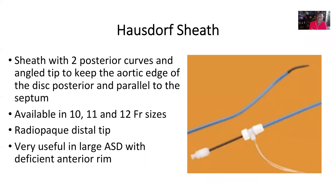The Hustoff sheath is a commonly used sheath — I like this sheath very much. It has two posterior curves and an angled tip to keep the aortic edge of the disc posterior and parallel to the septum. It comes in 10, 11, or 12 French sizes, allowing us to use bigger devices. It has a radiopaque distal tip so you know exactly where the tip of the sheath is. It's very useful in large ASDs with a deficient anterior rim. One has to be careful to avoid air entrapment when using this sheath. If you don't have a Hustoff sheath, you can also shape your sheath with a similar curvature to get the device parallel to the septum and aid deployment.